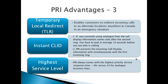Instant caller ID — instant call display is a very useful feature, especially if you're integrating your telephones into a database where you can match the incoming caller ID to your records. If you still use old analog lines, you have to wait at least two rings or 10 seconds before you see who's calling. With PRI, you get the call display information simultaneously with the first incoming ring, saving yourself 10 seconds on every call.